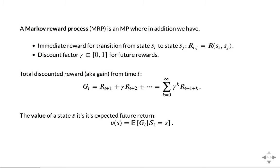With this, you can assign a value to each state, which is just the expected gain or expected reward. The expectation here is over the states — given that we're starting from state s, the expectation is over all future states we can transition to according to the transition probabilities. We might transition to some other state and get a different immediate reward, discounted by gamma. The sum continues until you reach a terminal state, or goes on forever if gamma is not 1, yielding some value. So each state has a value assigned to it.